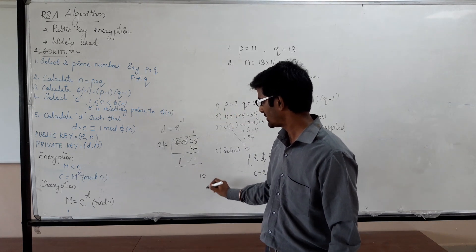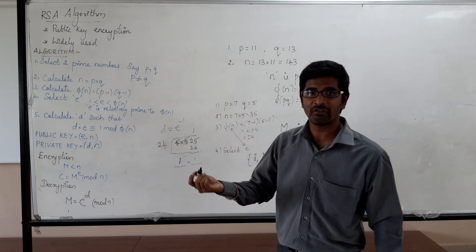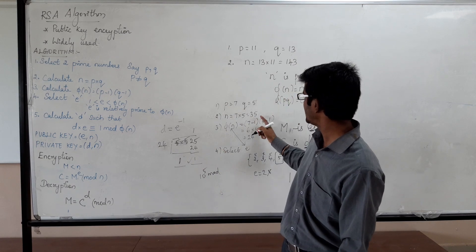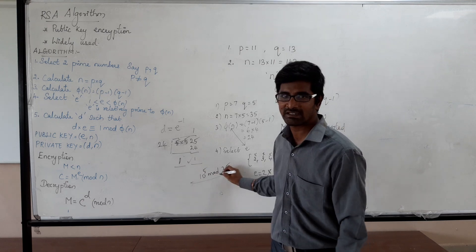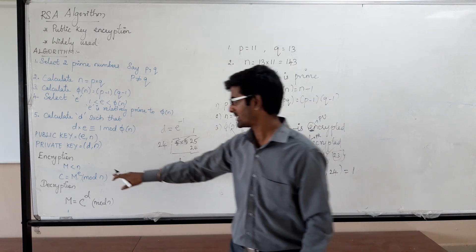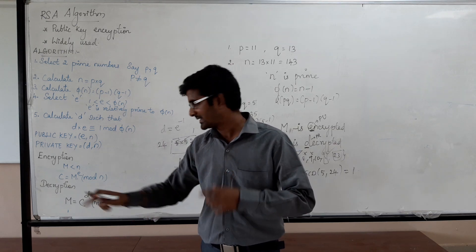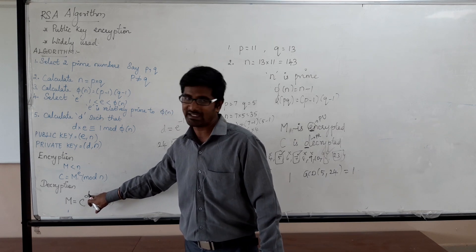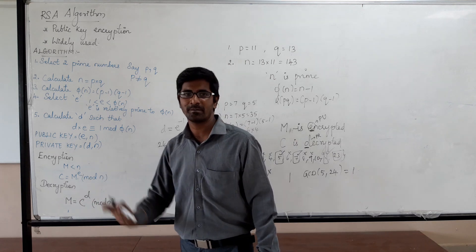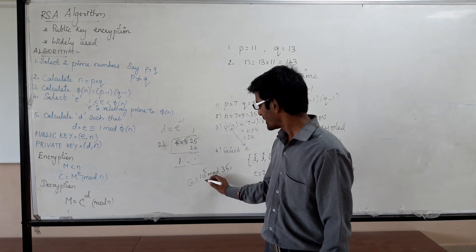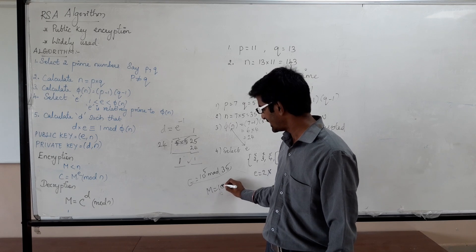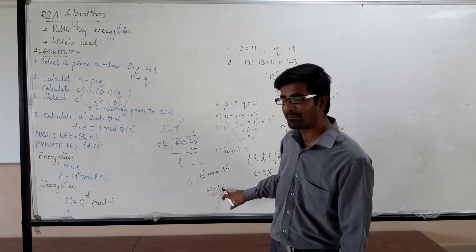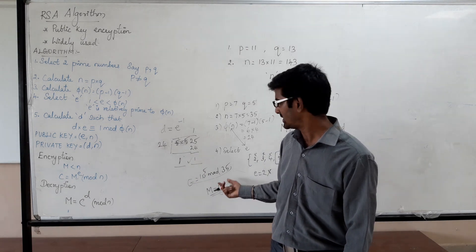For example, if the message M is 10, and E=5, compute 10 power 5 mod N, where N=35. Using the modular exponentiation technique and solving this, we get the ciphertext. To decrypt, take the ciphertext C and compute C power D mod N to get the plaintext back. Because the plaintext is 10, we will get the same plaintext back when decrypting with the private key.